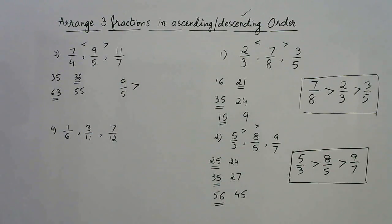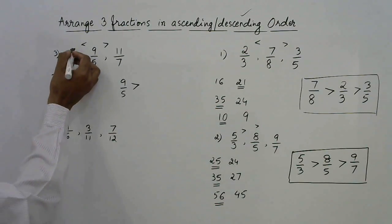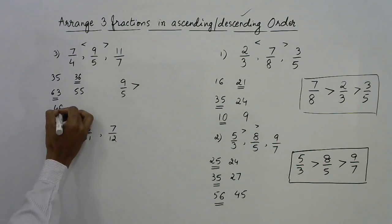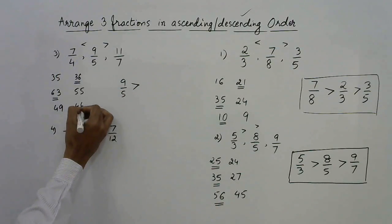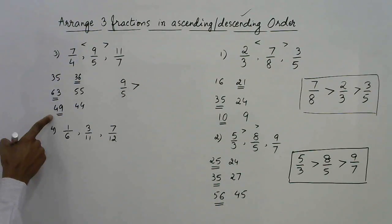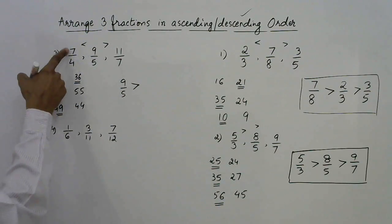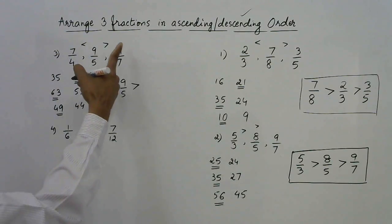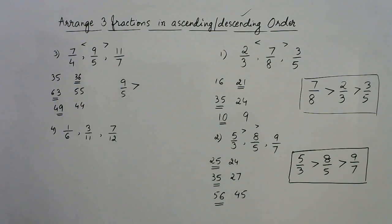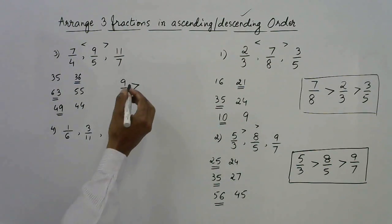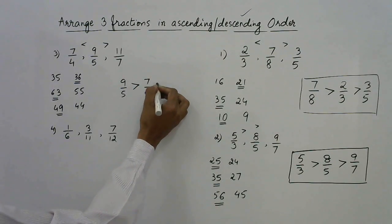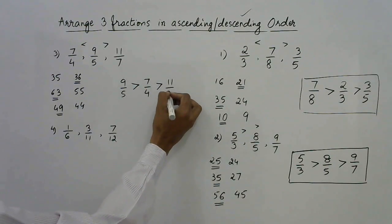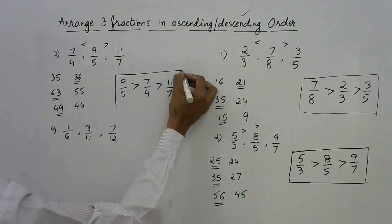The final comparison is between 7/4 and 11/7: 7 × 7 = 49 and 11 × 4 = 44. The larger product is on the left side, so 7/4 is greater than 11/7. The descending order is: 9/5 > 7/4 > 11/7.